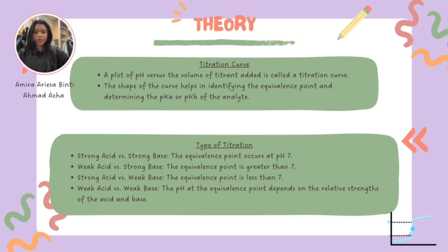For a weak acid-strong base titration, the equivalence point is greater than 7. The weak acid partially dissociates and the resulting conjugate base makes the solution slightly basic at the equivalence point. In a strong acid-weak base titration, the equivalence point is less than 7 — the strong acid fully dissociates and the conjugate acid of the weak base makes the solution slightly acidic. For a weak acid-weak base titration, the pH at the equivalence point depends on the relative strength of the acid and base, and the resulting pH can vary widely based on their dissociation constants.